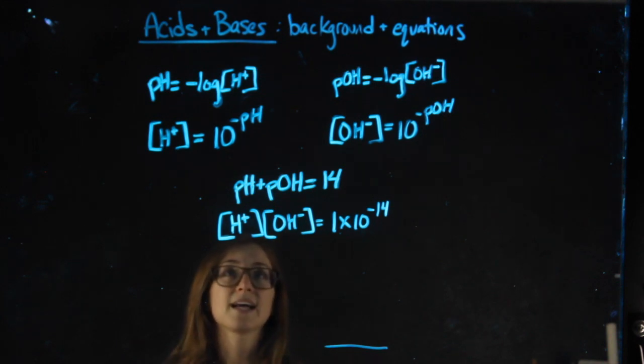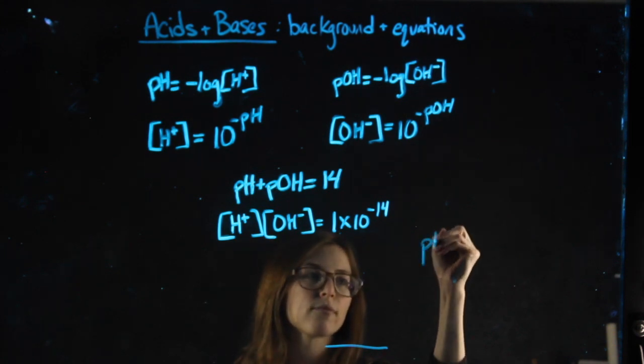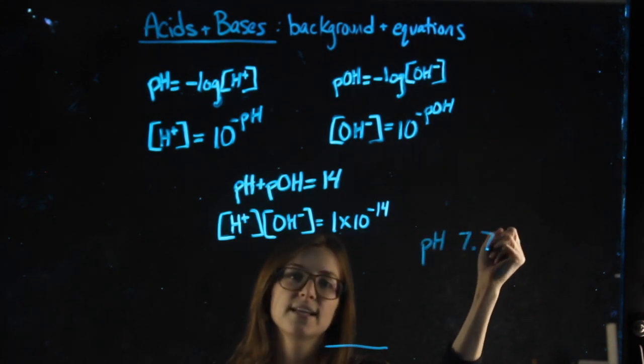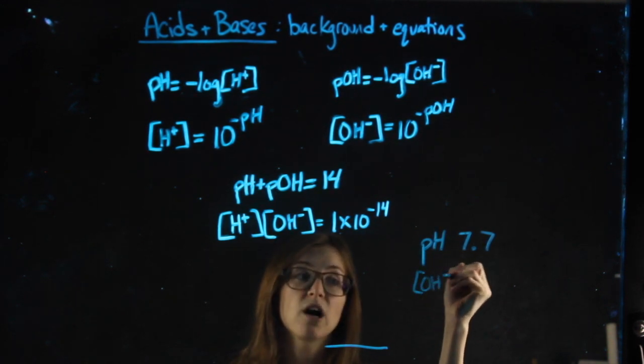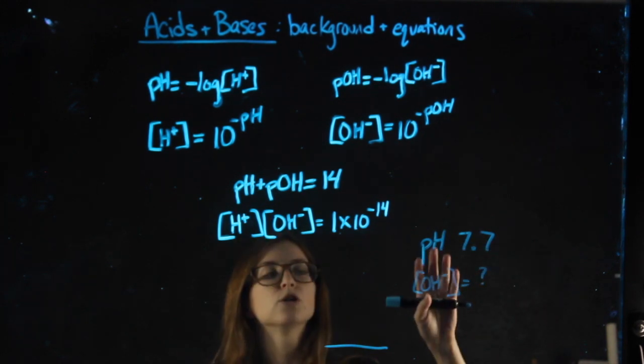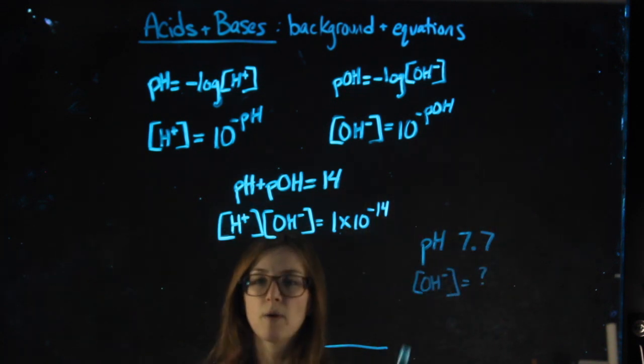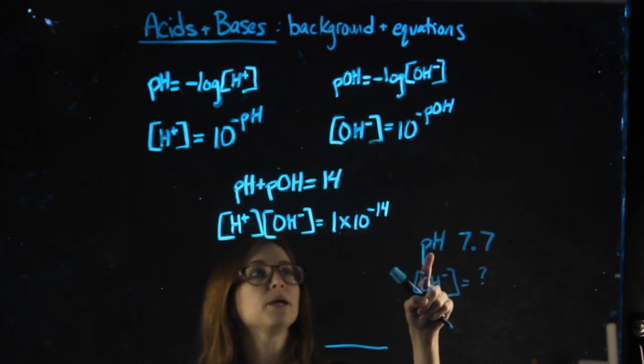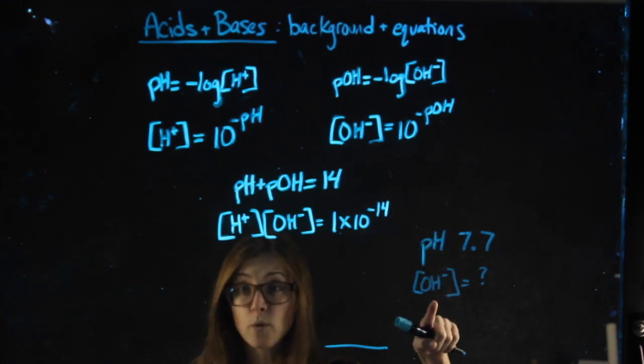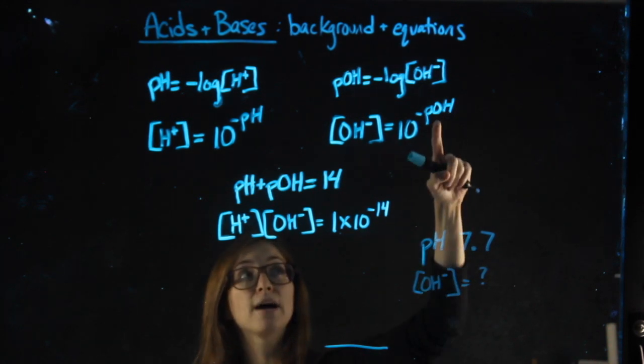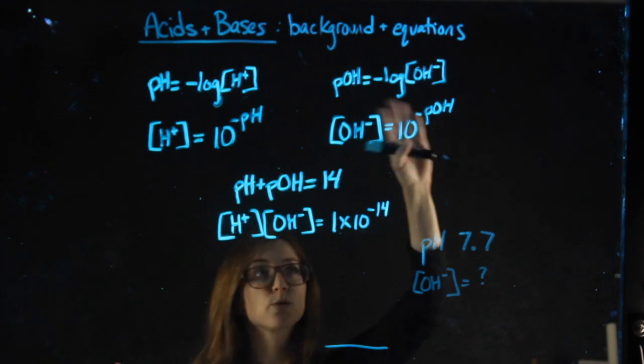So what I can do is I can give you any value. Let's say I told you something had a pH of 7.7. And from that pH, I could ask you to find the hydroxide concentration. So given that I have a pH of 7.7, I want to look at places where I could possibly plug pH in. Now, some people say, oh, I want hydroxide. So I'm going to plug in here. I do want hydroxide. But I don't have pOH. I have the pH. This does not say pH. This says pOH. So I can't plug in here.